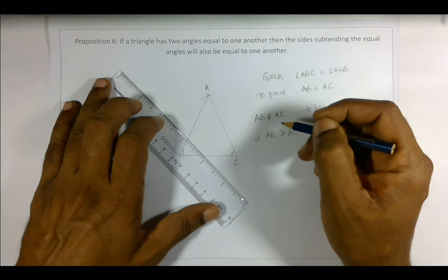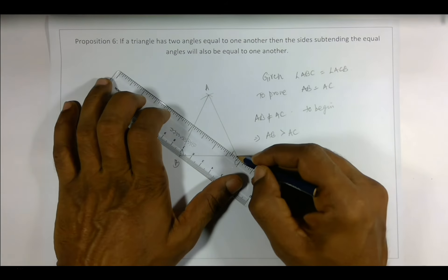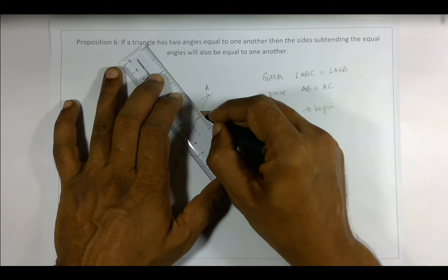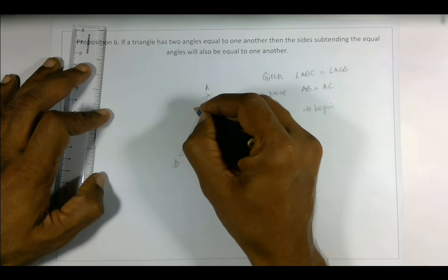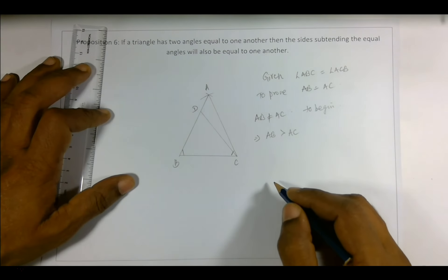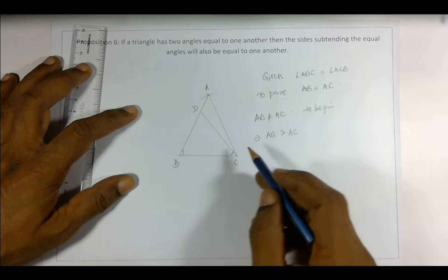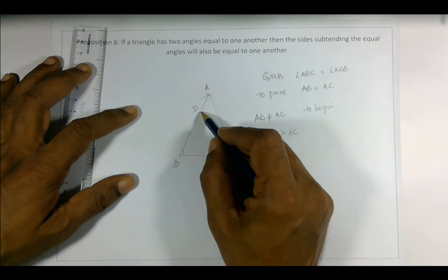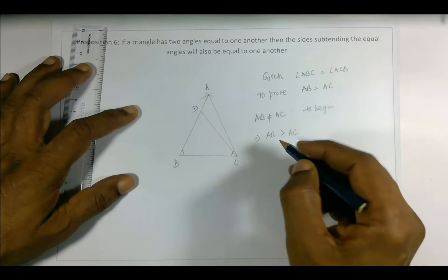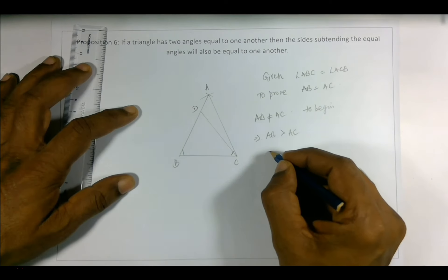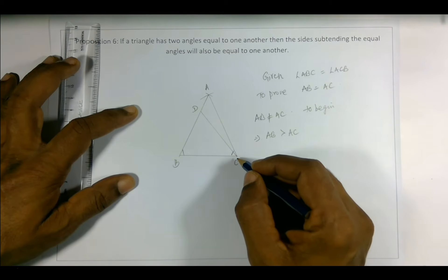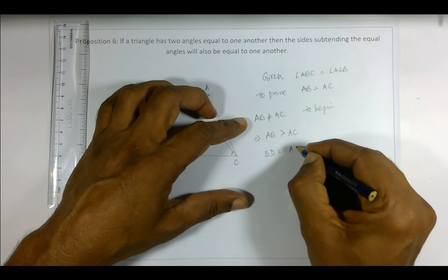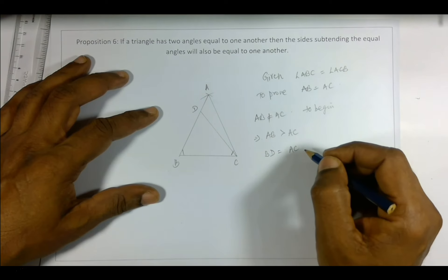...which is equal to AC. So let's say that point is... let's say D. Remember, AB is greater than AC we have said, so that means there is some point on AB which makes BD equal to... now BD is equal to AC.